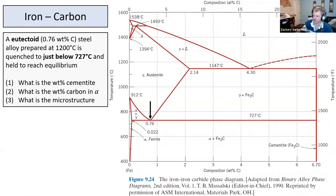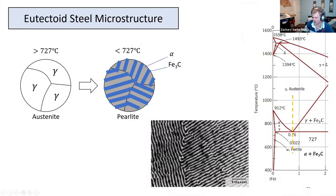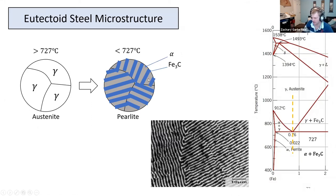The microstructure depends on your composition and what phase you're transitioning from and to. In the last example we had a eutectic microstructure going from liquid through the eutectic point into two solids, giving a lamellar structure. For the eutectoid you get the same type of lamellar structure — perlite — with a carbon-rich cementite phase and an alpha iron-rich phase. The only difference is we went from solid to two different solids: austenite to perlite. Importantly, perlite is not a phase — it is a microstructure. The phases are alpha and cementite. Austenite is a phase.